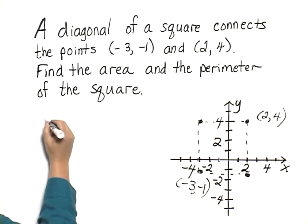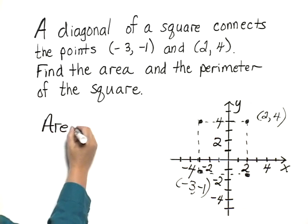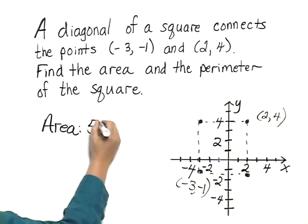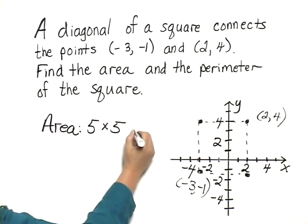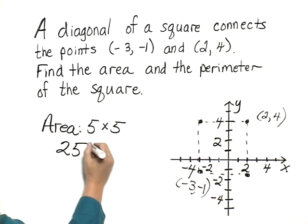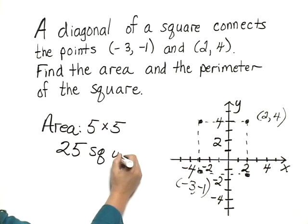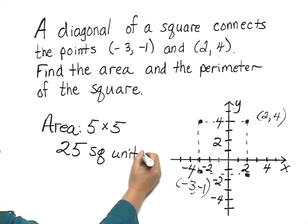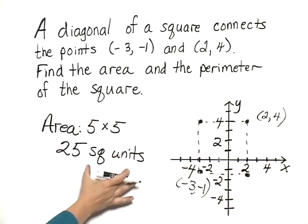So the area would be 5 times 5, or 25 square units. Since we don't know exactly what those units are, inches or centimeters, we'll just call them square units.